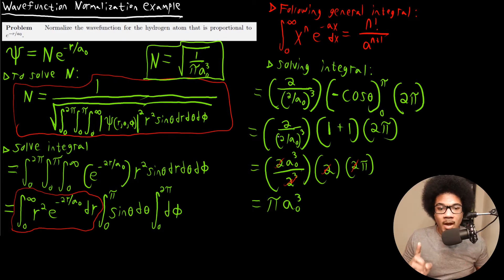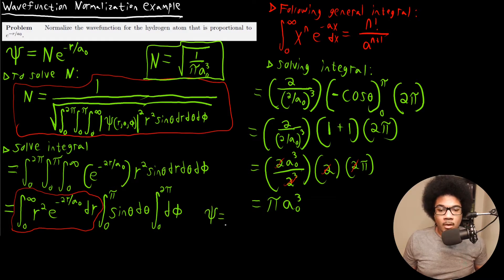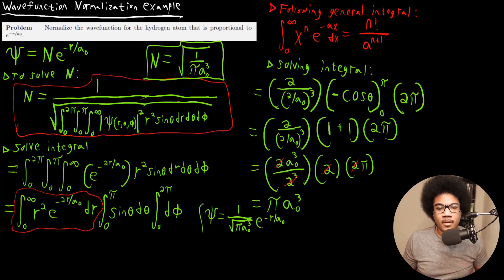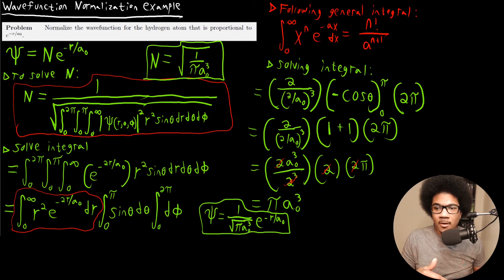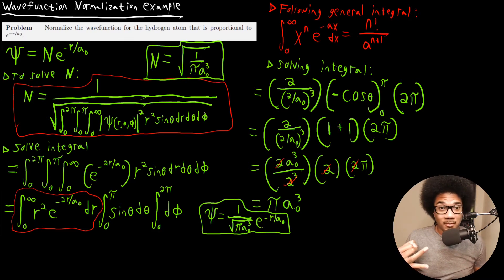So if we write out the normalized wave function, we can rewrite the normalization factor as 1 over the square root of π a-naught³ — since the square root of 1 is just 1. Our normalized wave function is therefore 1 over the square root of π a-naught³, times e to the negative r over a-naught. That is the normalized wave function — the normalization constant out front of our valid solution to Schrödinger's equation. This was a good example for getting experience with multidimensional integrals, spherical polar coordinates, and using them in this physical chemistry context.